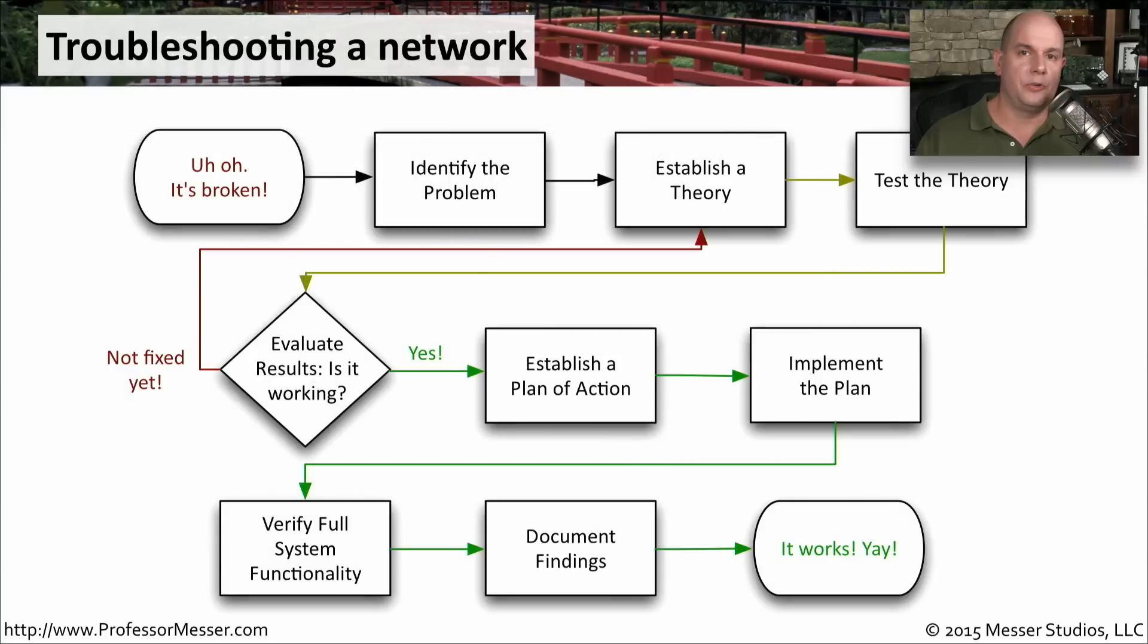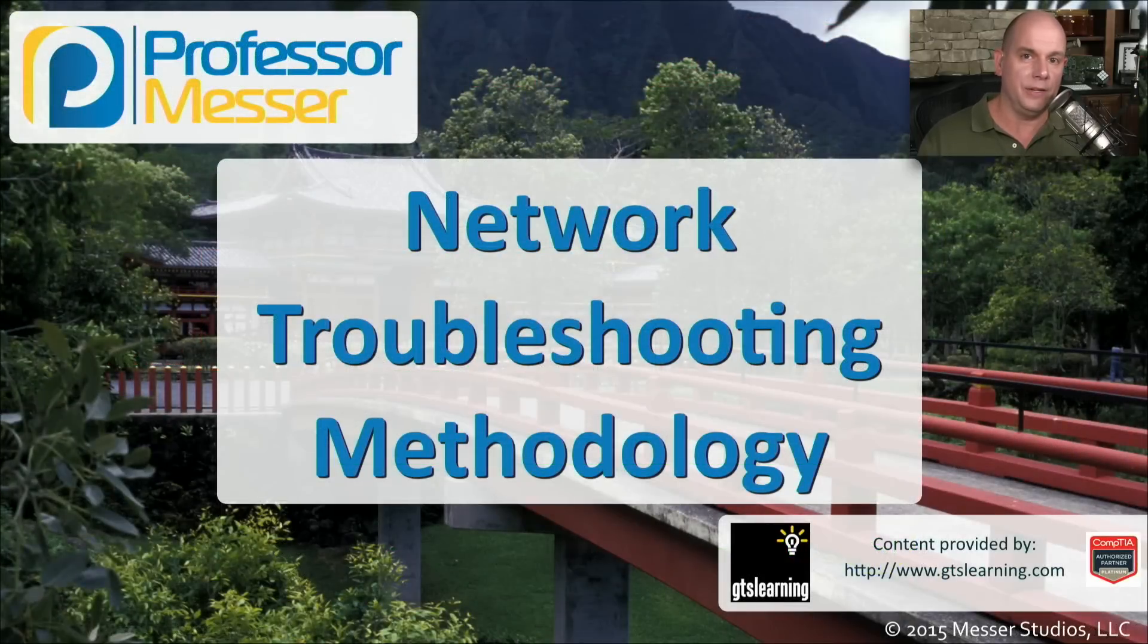So that's our network troubleshooting process. We'll identify where the problems are, we'll create some theories about resolving the issue, and then we'll test those to see if they really resolve the issue. And if they do, we can then create a plan to implement the fix. We can actually put the plan into place, make sure that everything is working properly at that point, document what we did, and now everything is back up and running. By following these very standard set of troubleshooting tasks, we can resolve any type of issue we might find on our network.